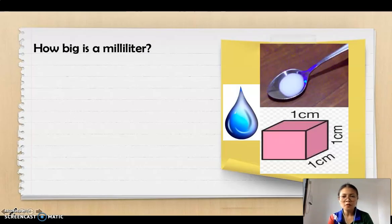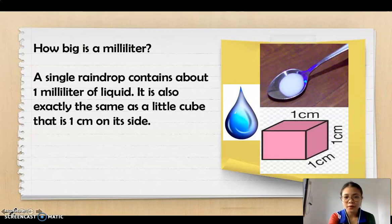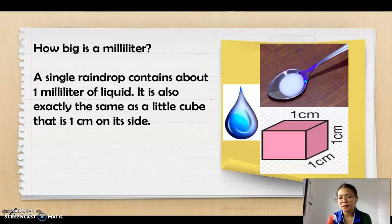Now, how big is a milliliter? A single raindrop contains about 1 milliliter of liquid. It is also exactly the same as a little cube that is 1 cm on its side. So, 1 cubic centimeter is equivalent to 1 milliliter.